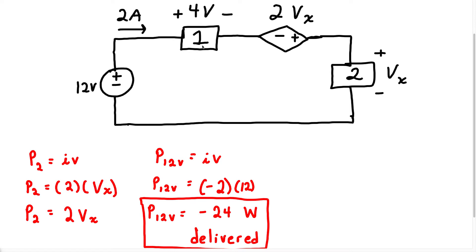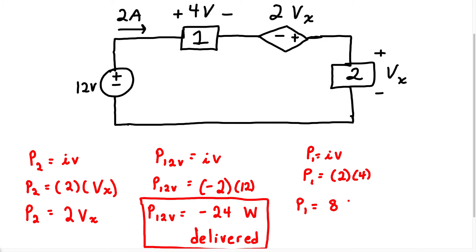Now let's do element 1. We have a 2-amp current that's flowing into the positive terminal, so we're going to have positive power. The current is 2 amps and the voltage is 4 volts. The power in this element is just 2 times 4, which is going to be positive 8 watts. Because it's a positive power, it's going to be absorbed.